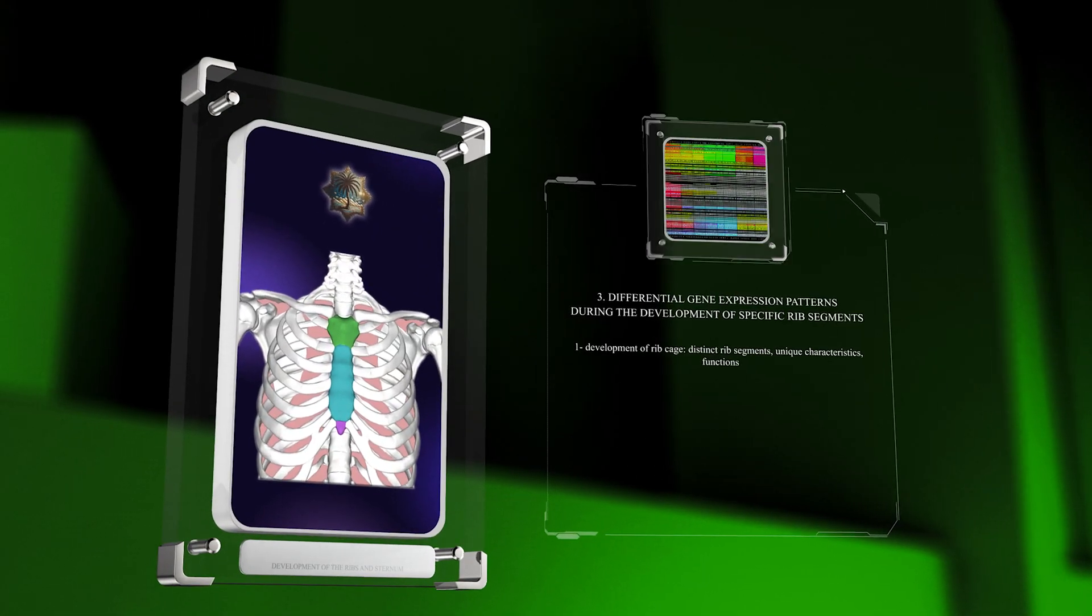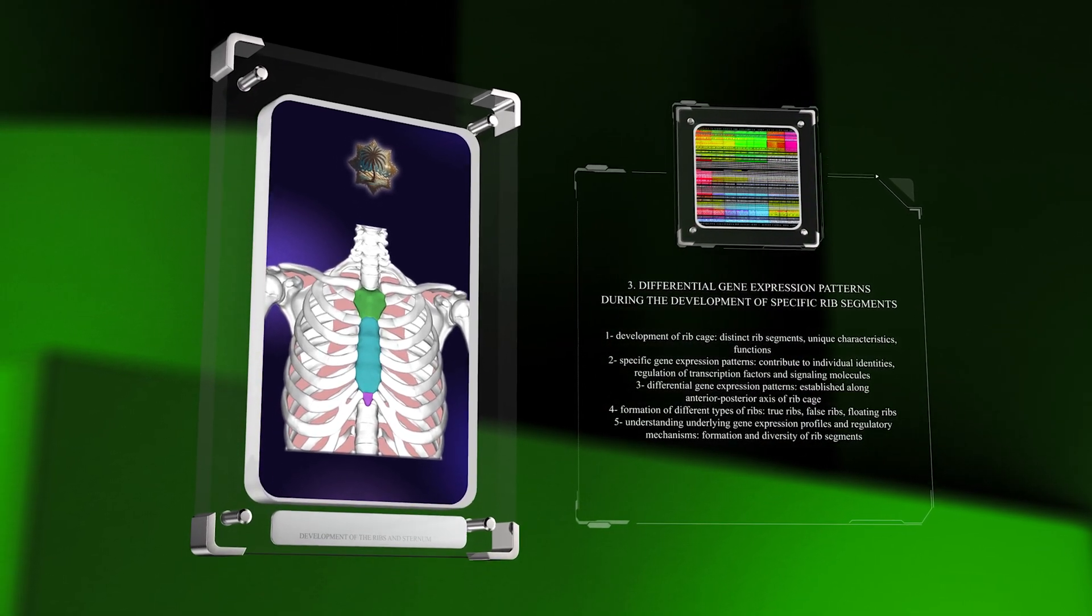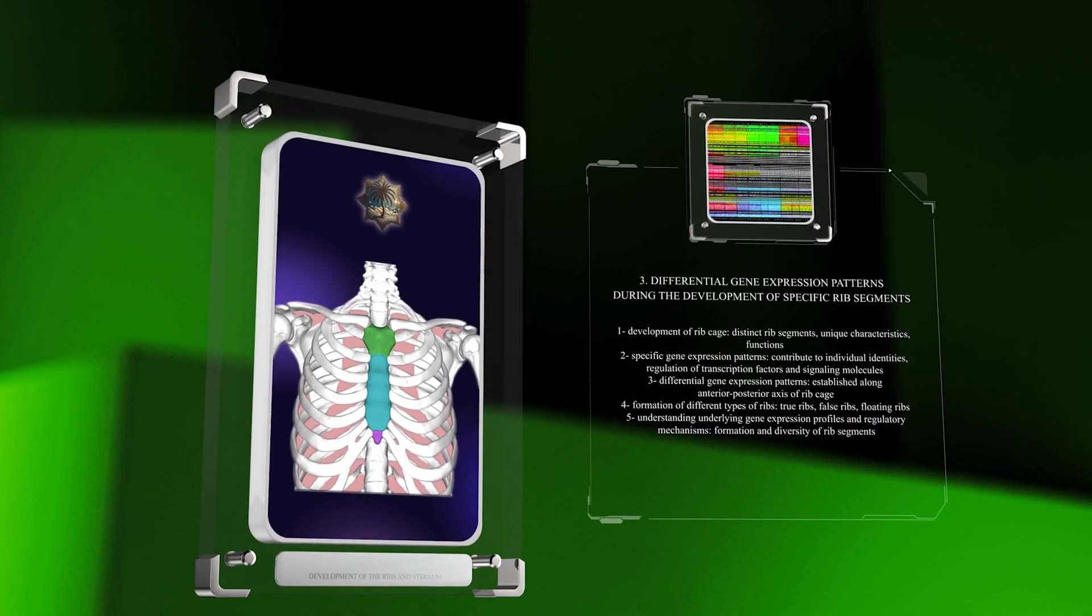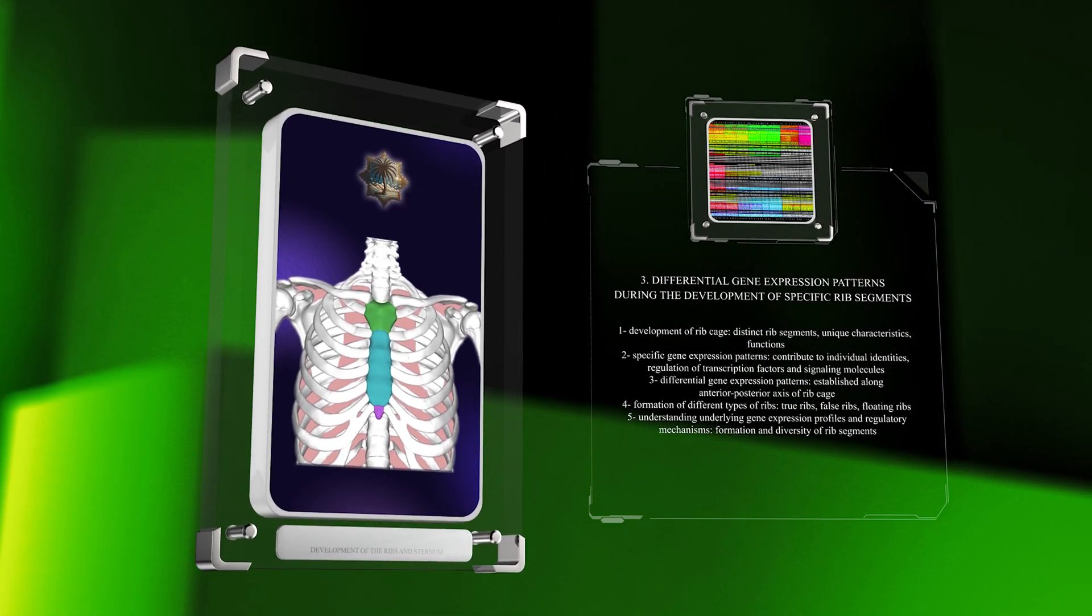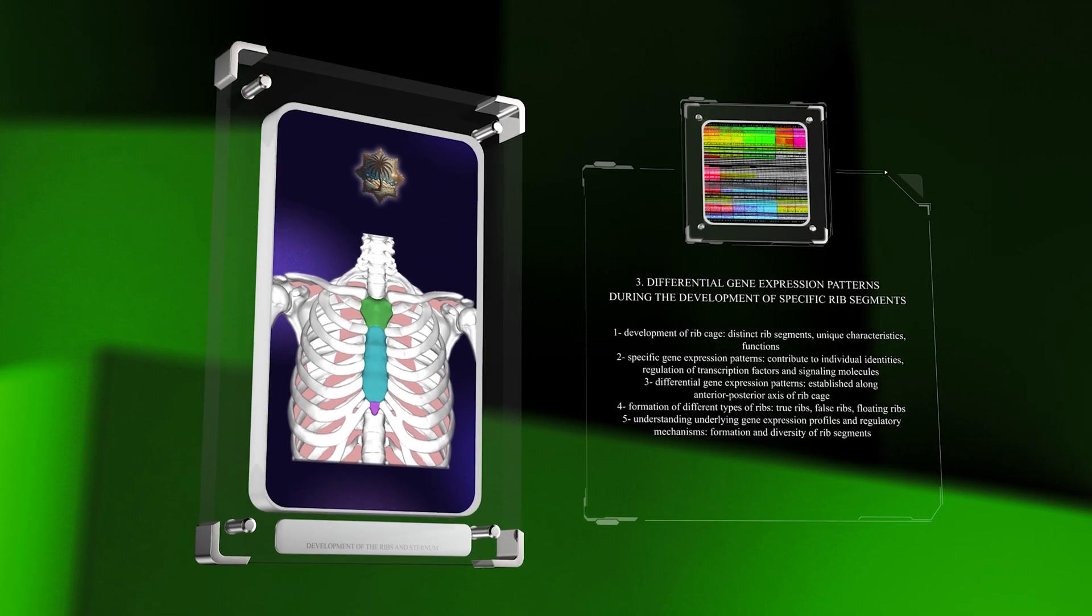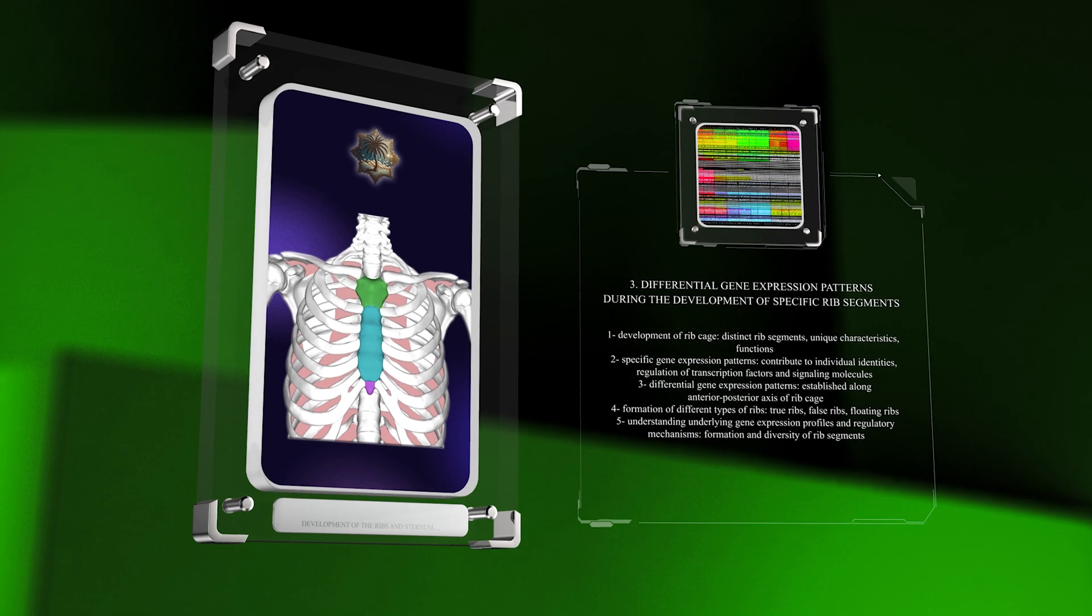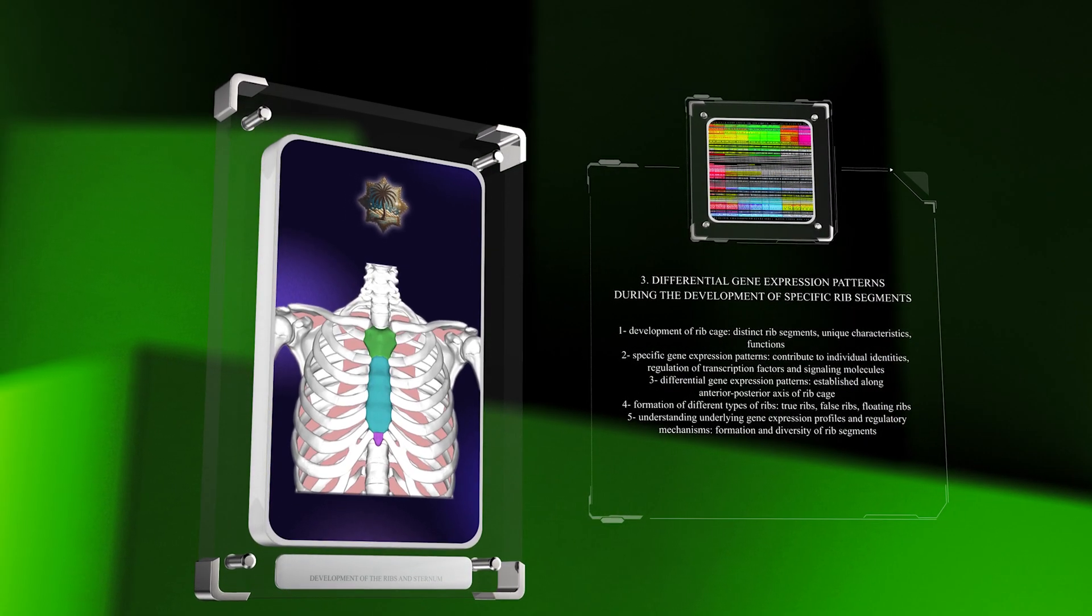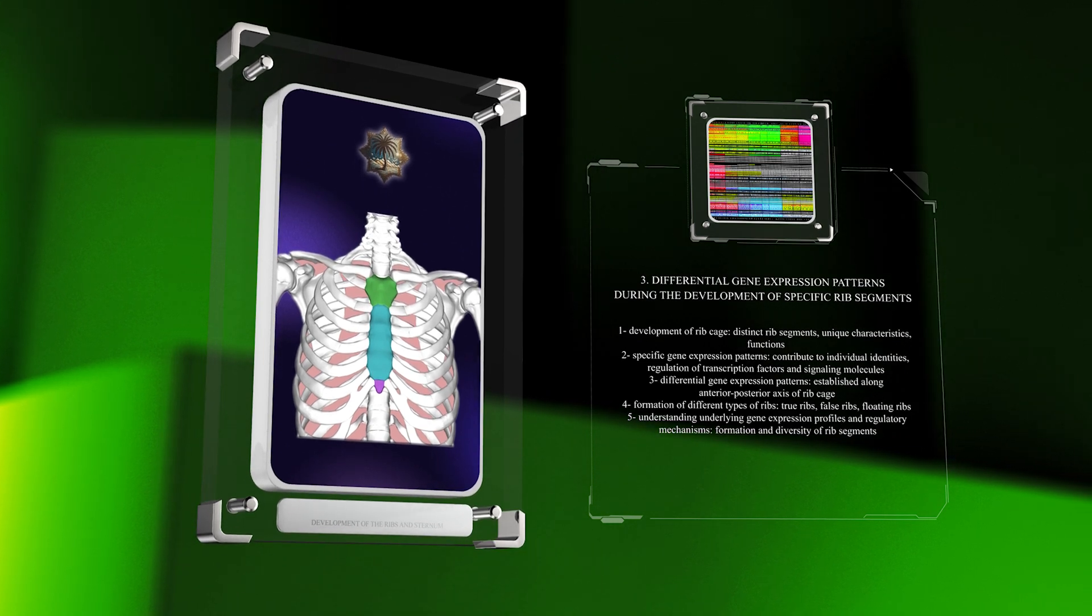The development of the rib cage involves the formation of distinct rib segments, each with unique characteristics and functions. These distinct rib segments exhibit specific gene expression patterns that contribute to their individual identities. Through the regulation of transcription factors and signaling molecules, differential gene expression patterns are established along the anterior-posterior axis of the rib cage. These patterns dictate the formation of different types of ribs, such as true ribs, false ribs, and floating ribs.